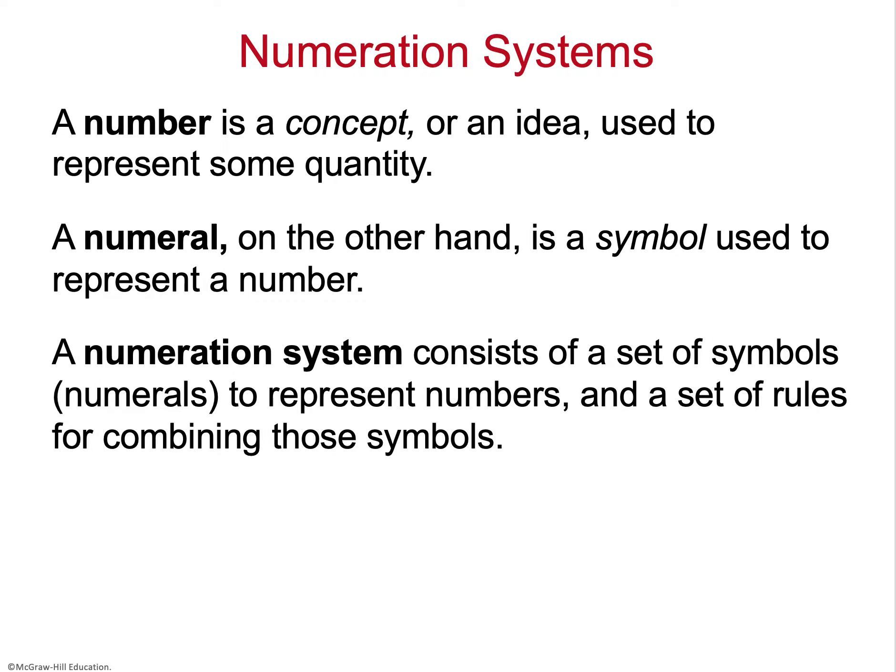A number is really a concept that represents a quantity. That's why every language has different words for numbers, but each number relates to an actual quantity in the real world. A numeral, on the other hand, is a symbol used to represent a number — some languages only have symbols that represent numbers. A numeration system is a set of symbols that represent numbers and a set of rules for combining those symbols.